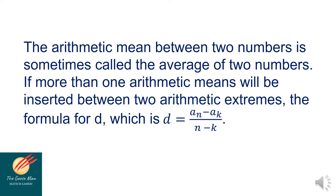The arithmetic mean between two numbers is sometimes called the average of two numbers. If more than one arithmetic mean will be inserted between two arithmetic extremes, the formula for d, or the common difference, is equal to a sub n minus a sub k, all over n minus k. Recall that a sub n is the second term mentioned in the problem, while a sub k is the first term mentioned.